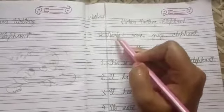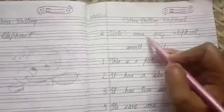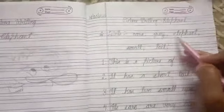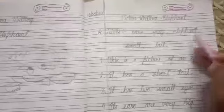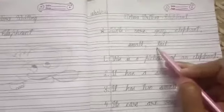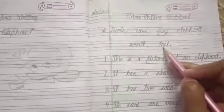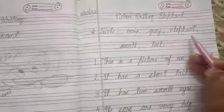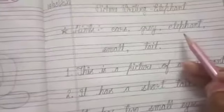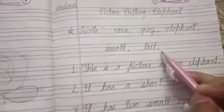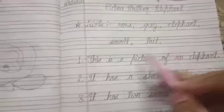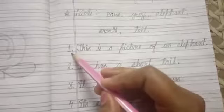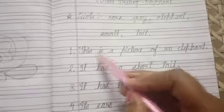Hints: ears, comma, gray, comma, elephant, comma, small, and last, tail, and then full stop. Don't forget to put these small things, comma and full stop. Then in the first line, this is a picture of an elephant, at last full stop. Elephant is given in the hint box.